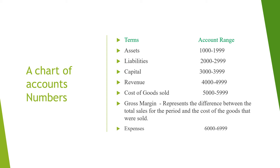Gross margin represents the difference between total sales for the period and the cost of goods sold. Expenses accounts range from 6,000 to 6,999. Those are the account number ranges.